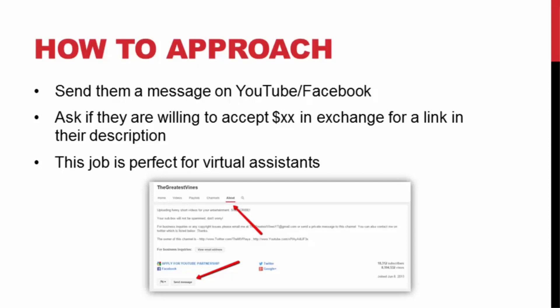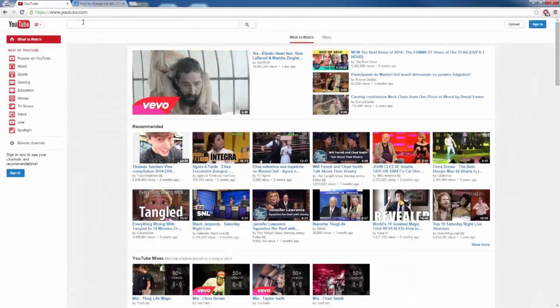The price you offer depends on how many views they have, how many they're getting, and how targeted or important the keyword is. If they're ranking high on a very common keyword and getting thousands of views per day, offer more than you would for a video on a long-tail keyword getting 10 or 20 views per day. You can negotiate monthly, yearly, or forever — discuss it and meet at an agreement. This job is perfect for a virtual assistant — outsource it and have them go out and find these videos and reach out to these people so you can spread your website link across niche-related videos without doing the work yourself.